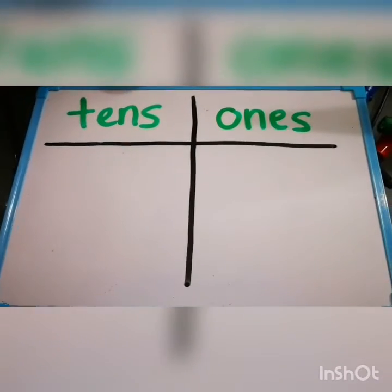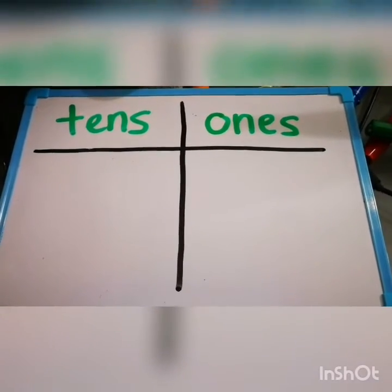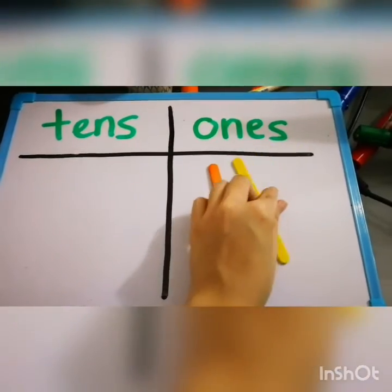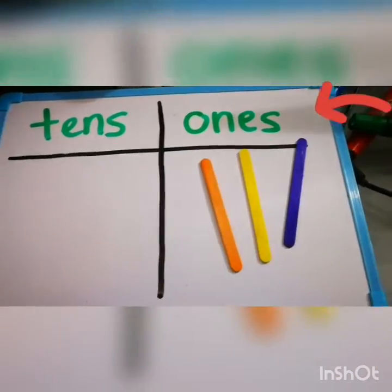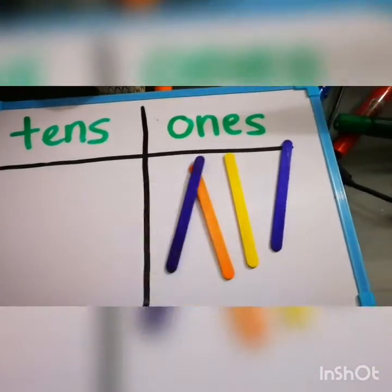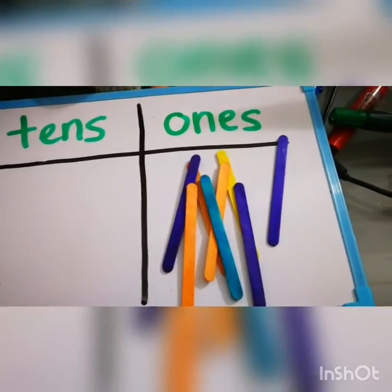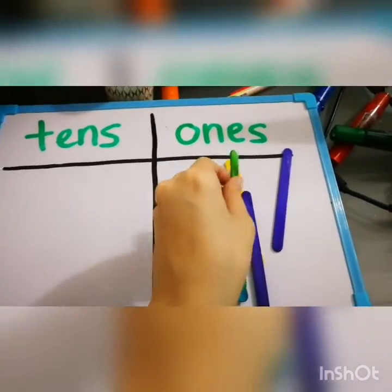So 10's and 1's have different place values. As we were counting the popsicle sticks one by one, they were all going at the 1's place value. So 3, 4, 5, 6, 7, 8, 9, 10.